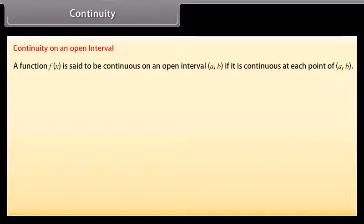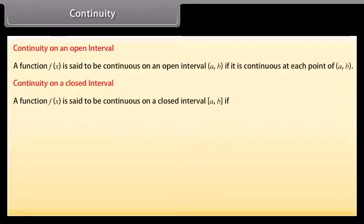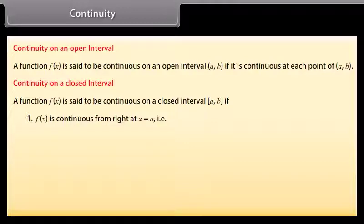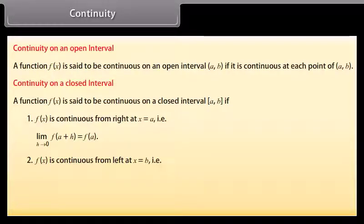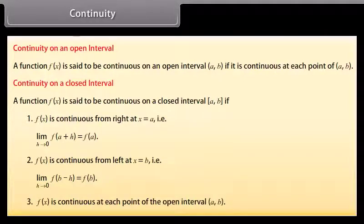Continuity on an open interval: A function f(x) is said to be continuous on an open interval (a, b) if it is continuous at each point of (a, b). Continuity on a closed interval: A function f(x) is said to be continuous on a closed interval [a, b] if: (1) f(x) is continuous from the right at x = a, that is, limit h→0 of f(a+h) = f(a); (2) f(x) is continuous from the left at x = b, that is, limit h→0 of f(b−h) = f(b); and (3) f(x) is continuous at each point of the open interval (a, b).